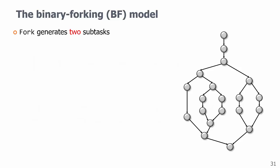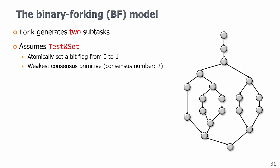And second, we also assume the weakest atomic operation, test and set, that tries to atomically set a bit flag from 0 to 1 and returns true only when it successfully does so.